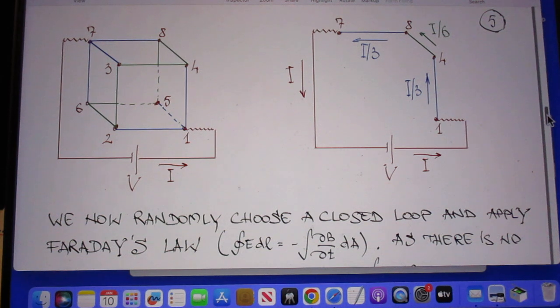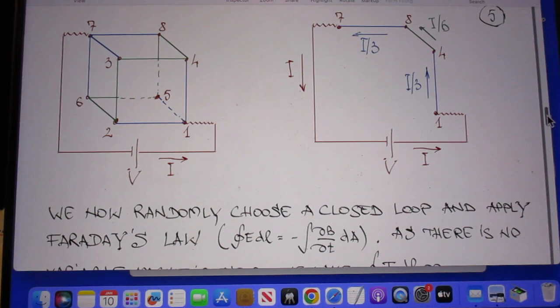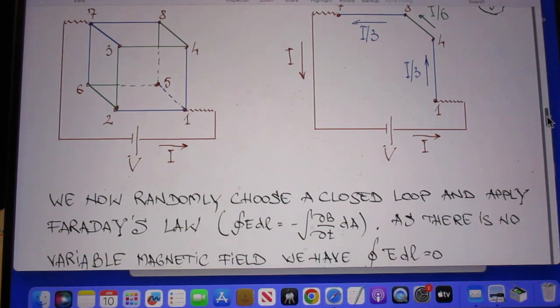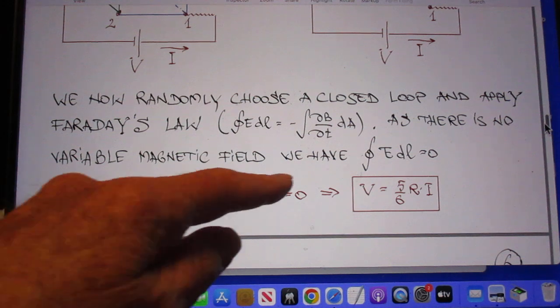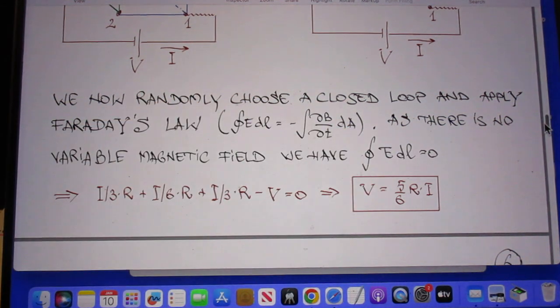Since there is no magnetic field involved here, no changing magnetic field anywhere, the closed loop integral of any closed loop that you choose of E dot DL must be zero. Faraday's law. It would also be Kirchhoff's loop rule because that is a special case of Faraday's law. Kirchhoff's loop rule only works if there is no magnetic field changes, which happens to be the case here. So the closed loop integral of E dot DL is zero.